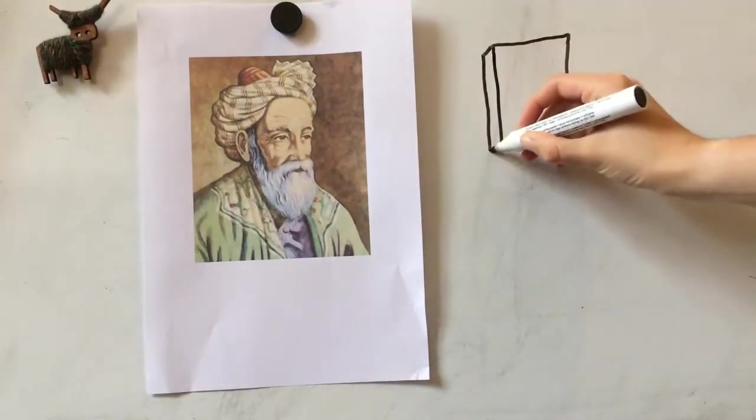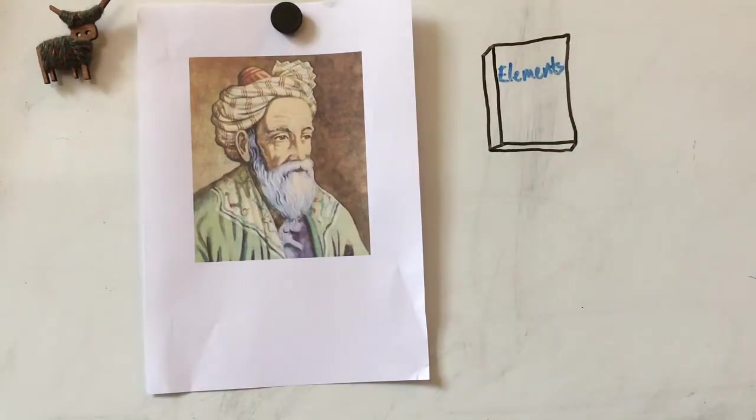Euclid wrote a famous book called Elements, in which he proved that for a right-angled triangle, a squared plus b squared equals c squared, using his axioms and deductive reasoning. This is thought to be the first proof of this type for the Pythagorean theorem.